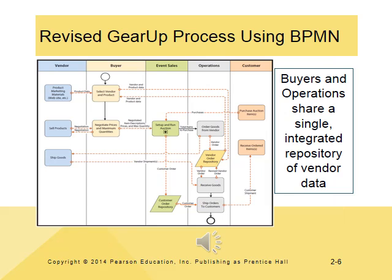This slide and the corresponding chart in the book give an example of how information systems can be revised to improve efficiency. If you pay close attention, you'll notice that before, there were two different databases or data repositories that buyers and operations maintained separately. In the revised, improved version, they share a single database. Sharing information eliminates duplication, accuracy errors, and all kinds of issues — and we're going to cover that further when we talk about databases.